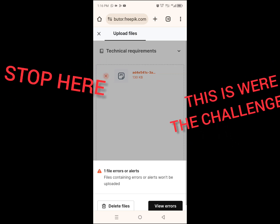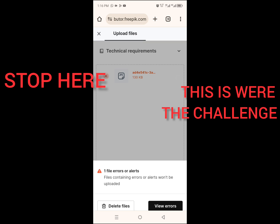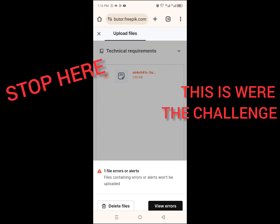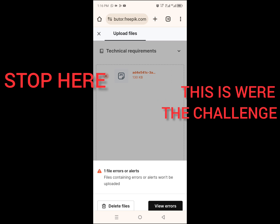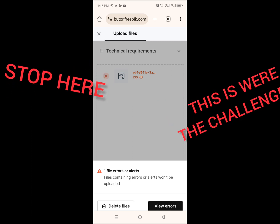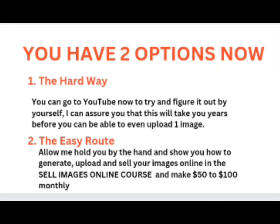So this is where the problem starts. You cannot go further than this place even if you try tomorrow. But in the 'Sell Images Online' course, there is a secret website I have reviewed where you can easily upload your images. So right now you have two options. Number one, the hard way: you can go to YouTube and try to figure it out yourself — and I can assure you that in the next one year, you will not be able to upload even one image. Or the easy route: allow me to hold you by hand and show you how to generate, upload and sell your images online in the 'Sell Images Online' course and make at least $50 to $100 every single month.